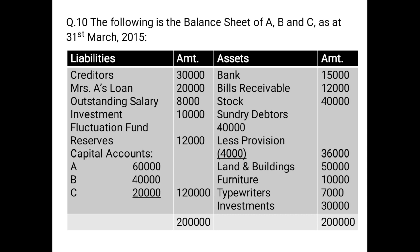Next is investment fluctuation fund. We already discussed this: the first thing to check is whether investment is given on the asset side. If investment is not on the asset side, it will be distributed among partners in PSR. But if investment is given on the asset side — as we can see, the last asset listed is investment — then investment fluctuation fund will NOT be distributed. Rather, it will be transferred on the credit side of the realization account: by investment fluctuation fund, Rs. 10,000.